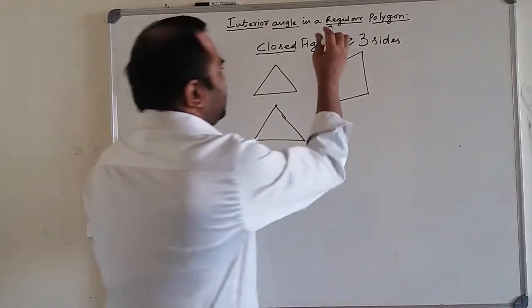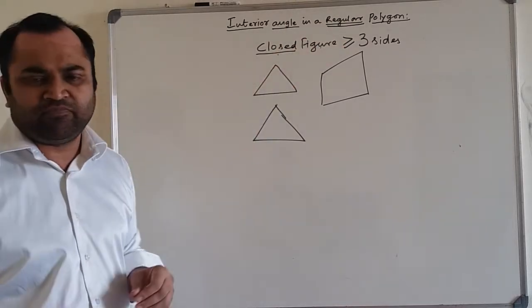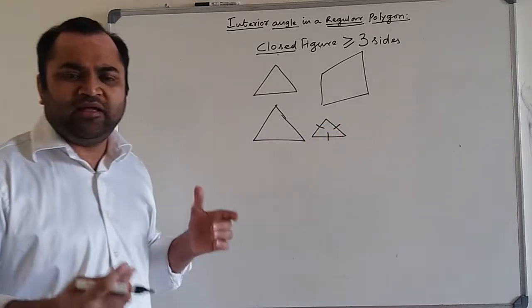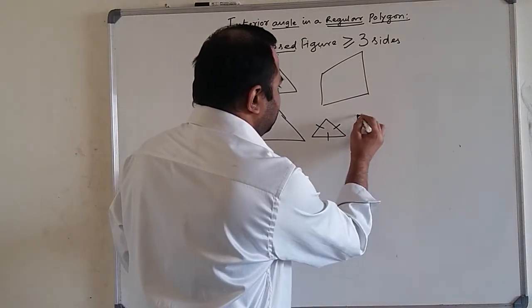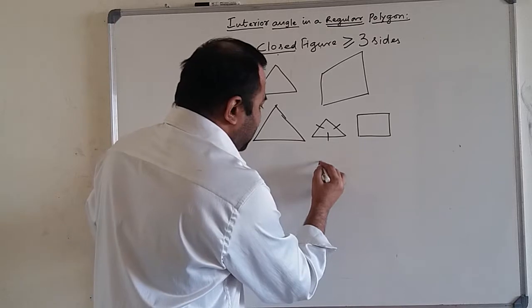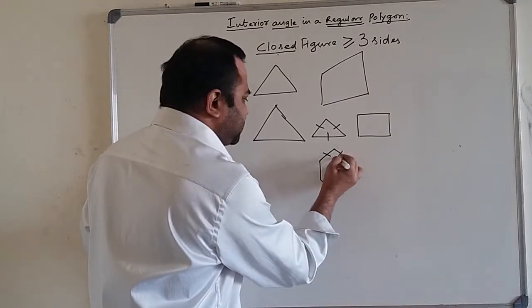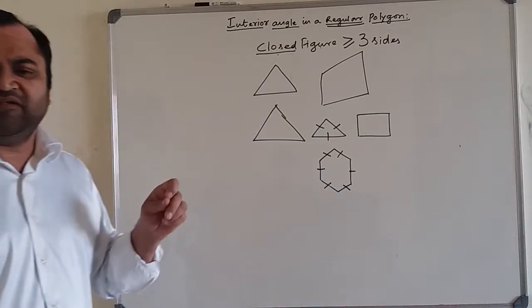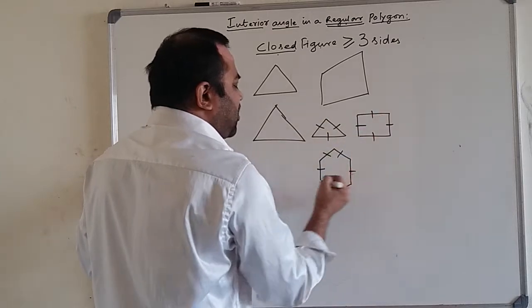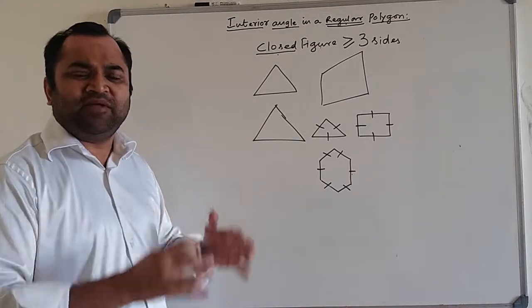What is a regular polygon? A polygon in which all the sides are equal is called a regular polygon. For example, an equilateral triangle — in which all three sides are equal — is a regular polygon. A square, in which all four sides are congruent, is a regular polygon. A hexagon is a six-sided closed figure, and a regular hexagon is one in which all six sides are equal in length.